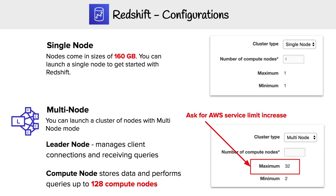For Redshift configuration, you can set it up in two different cluster types. Single node is a great way to get started — you can launch a single node of 160 gigabytes. Or you can launch in multi-node mode. With multi-node, you always have a leader node and then compute nodes, and you can add up to 128 compute nodes.